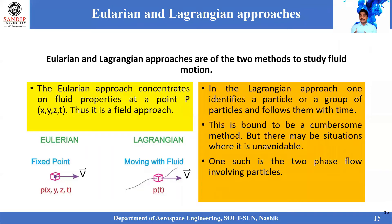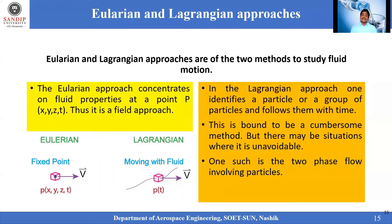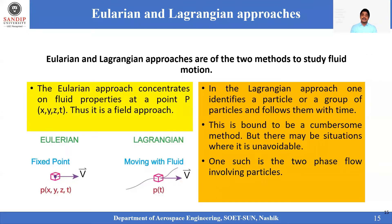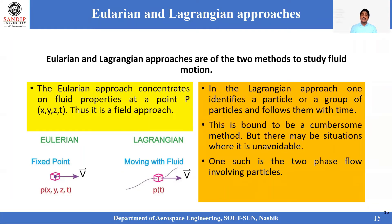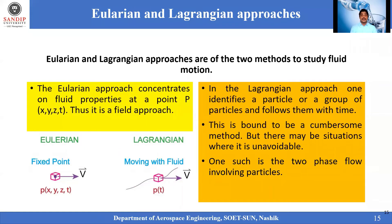If the result is the same, why not always use the Eulerian approach? The Eulerian approach works well for single-phase fluid flow — when only one fluid is available. When more than one fluid or phase is present, the Eulerian approach will fail to analyze that particular problem, so we go with the Lagrangian approach for multi-phase flow.